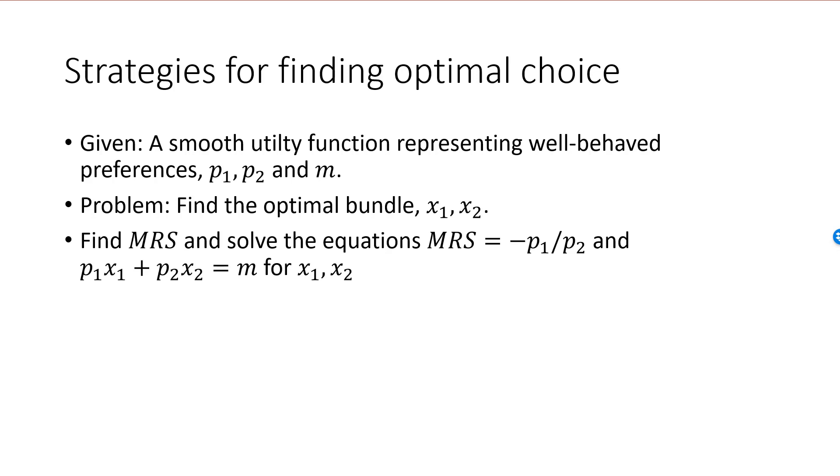The first method goes as follows. First, you differentiate your utility function and find the marginal utilities, mu1 and mu2. From these, you can find MRS. This is the marginal rate of substitution of an arbitrary bundle, and it will be a function of x1 and x2.